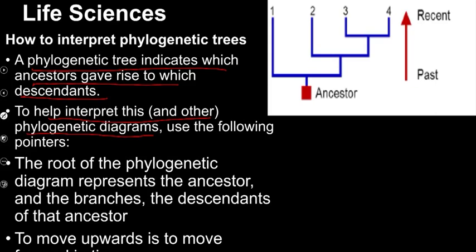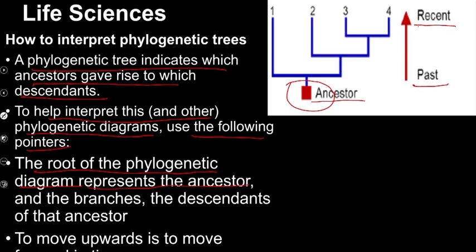So let's have a look at how we're going to do it. They say to use the following pointers. The first thing is we look at the roots of the phylogenetic diagram, and that represents the ancestor. If we have a look at this diagram, we can see this is the roots — there we have the ancestor. Looking at the arrow and the time scale on the side, we start at the past and we move up towards the more recent time.